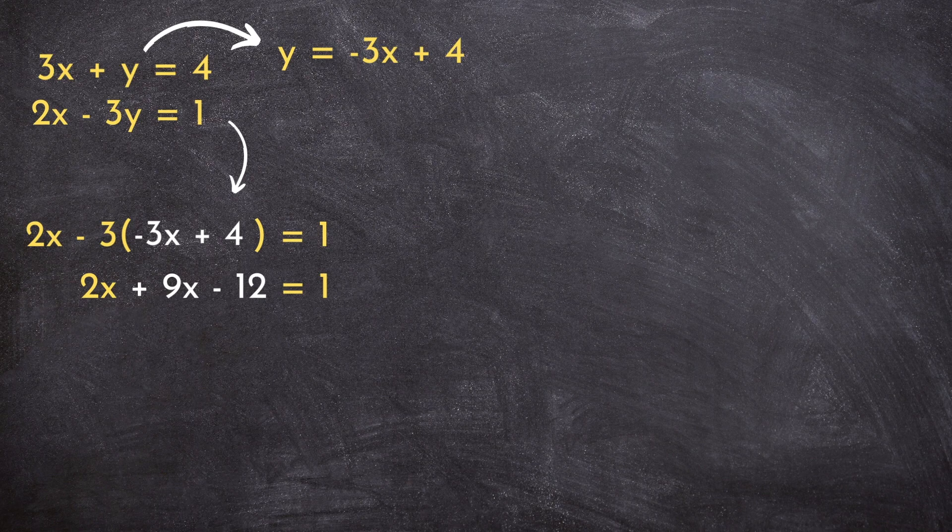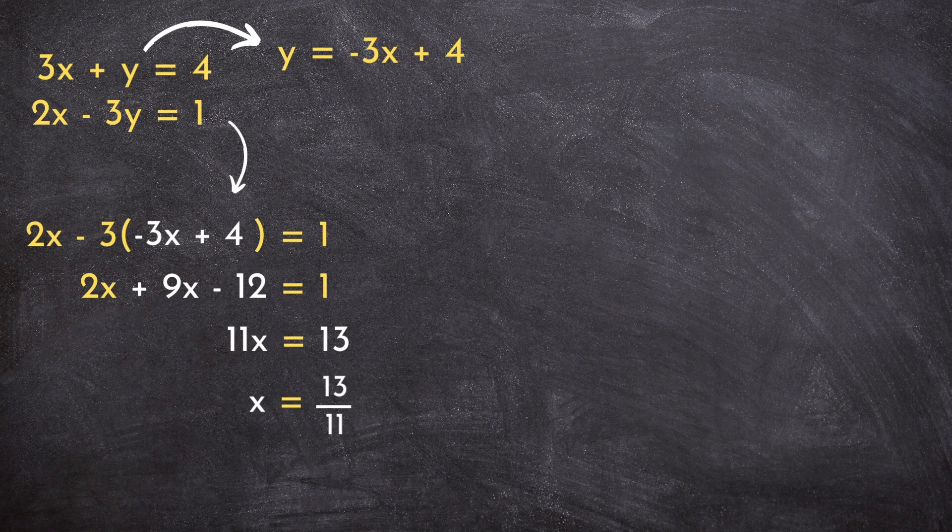And at this point, we can collect our two terms with an x to get 11x. We can move our negative 12 over to the other side to get 13. And you'll see that I'm left with a simple one-step equation. Dividing both sides by 11 will allow us to solve for x, giving us an x value of...